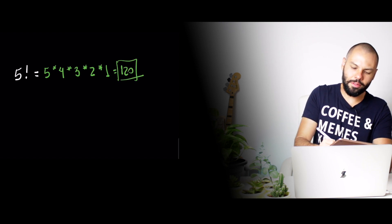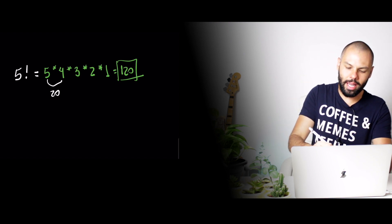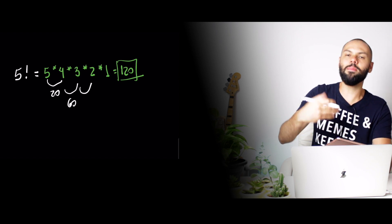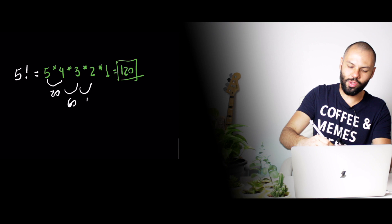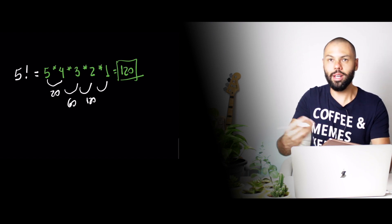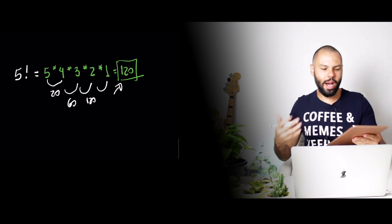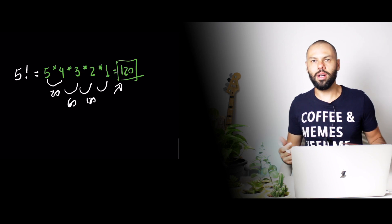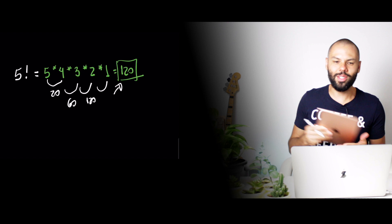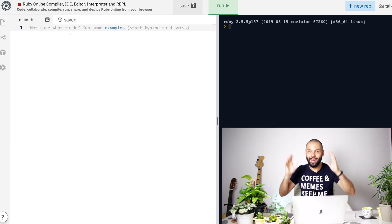Five multiplied by four is 20, then 20 multiplied by three is 60, then by two is 120, and 120 multiplied by one is still 120. So that's the result of this calculation — very simple, very common. Now let's try to translate that to Ruby code.